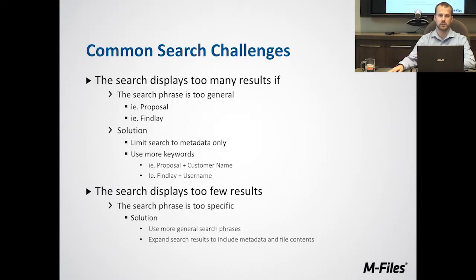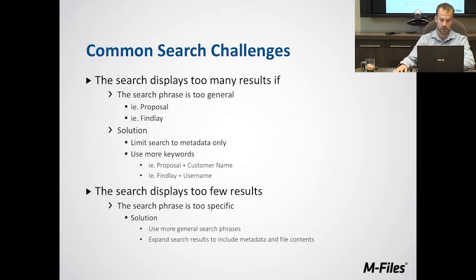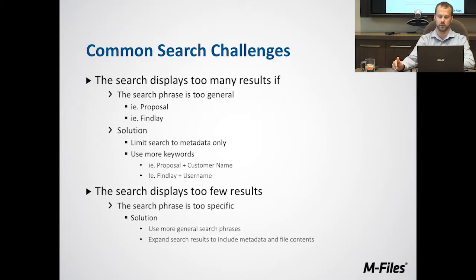If we're getting way too many results, that means we're probably being very vague with our search — maybe just putting in 'Findlay' and getting every single document related to Findlay Creek. The fix is to be more specific: add a document type, a site name, a customer name, or a lot number — anything to narrow down your search and bring what you're looking for higher up in the list.